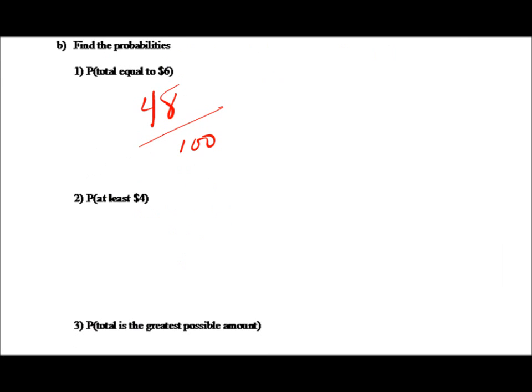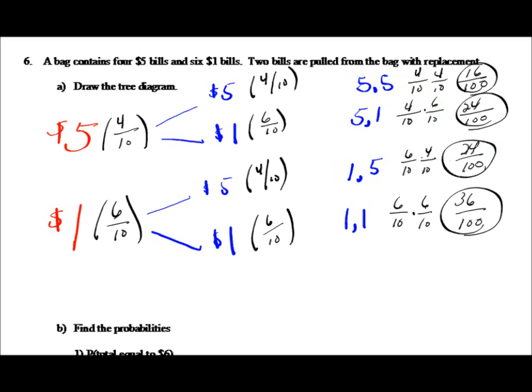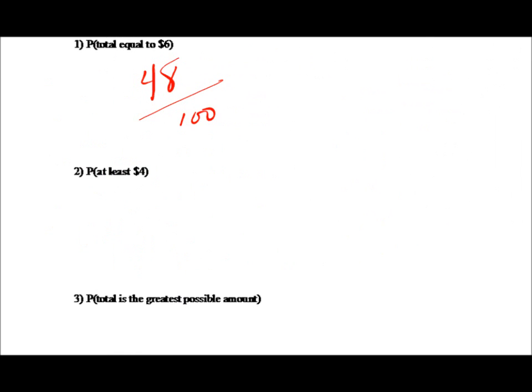Question two asks for at least four dollars — four dollars or more. That happens everywhere except a one and a one. Adding sixteen, twenty-four, and twenty-four gives sixty-four out of one hundred. Finally, the probability of the greatest possible amount: that's drawing two five dollar bills, with a probability of sixteen out of one hundred.